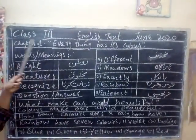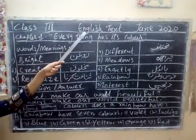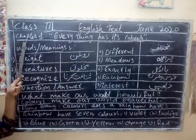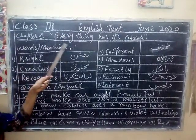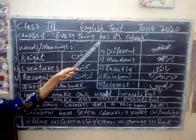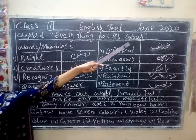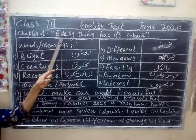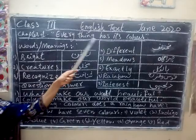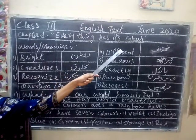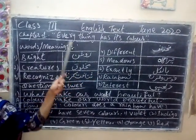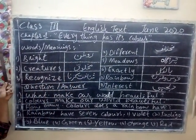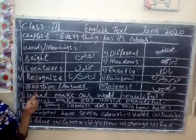Class 3, English Text. Chapter number 1, Everything has its colors. This means that everything has its colors, and these colors will make our world beautiful. This is what you have to do in this chapter.